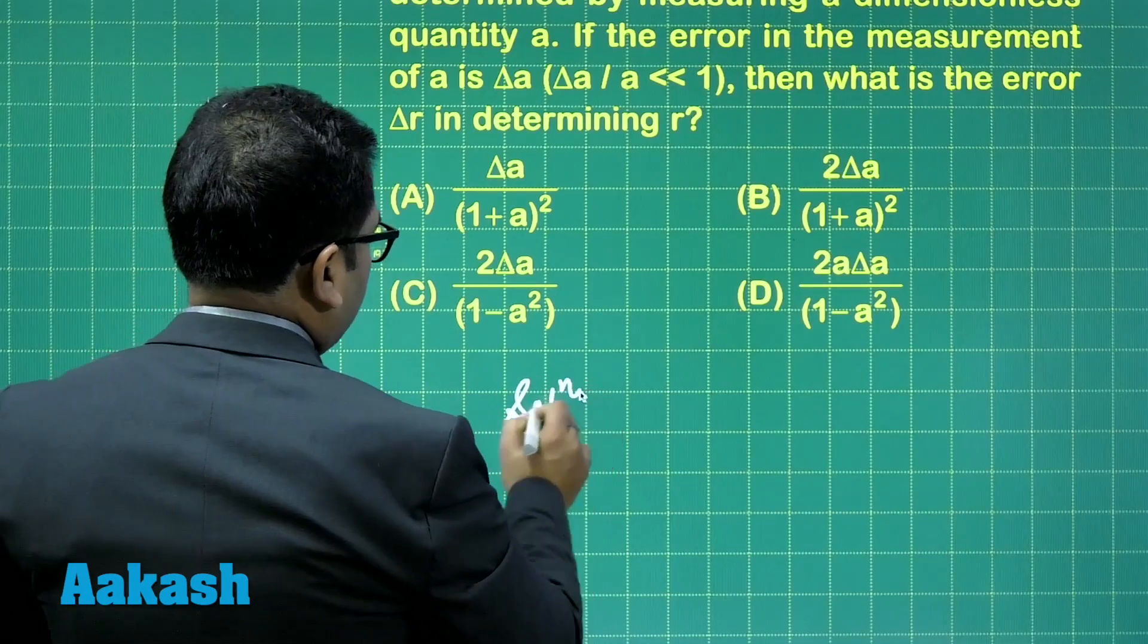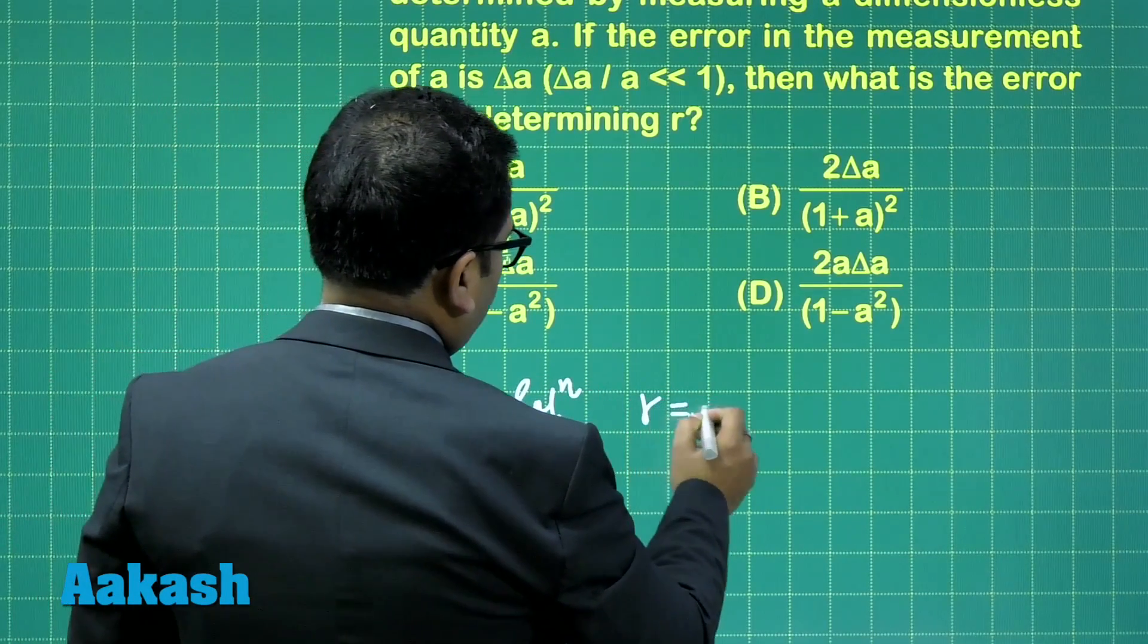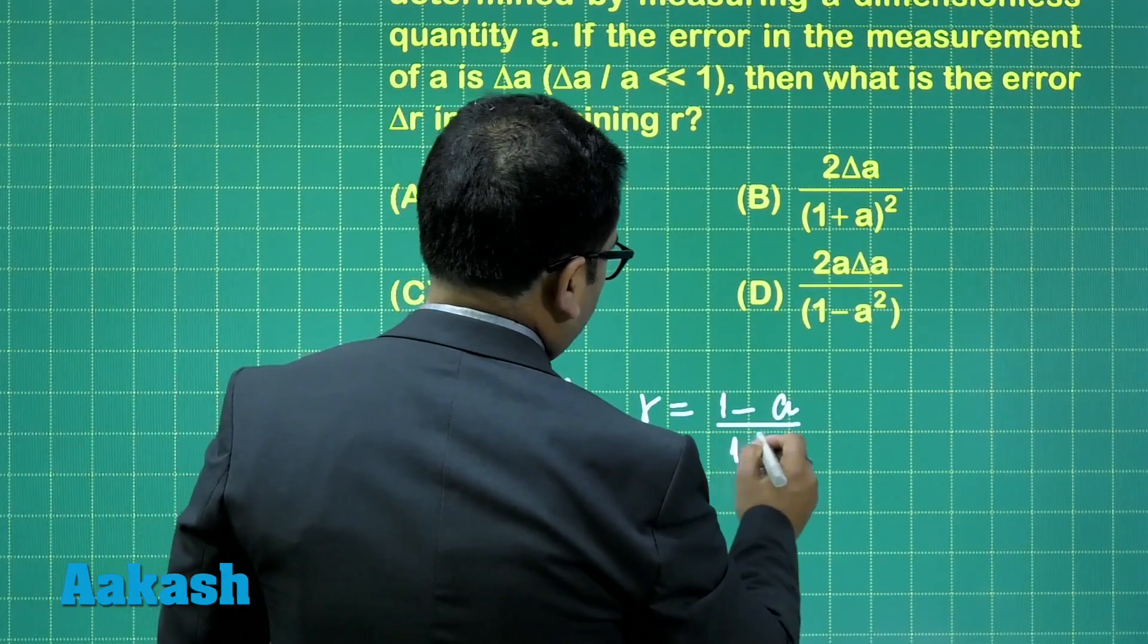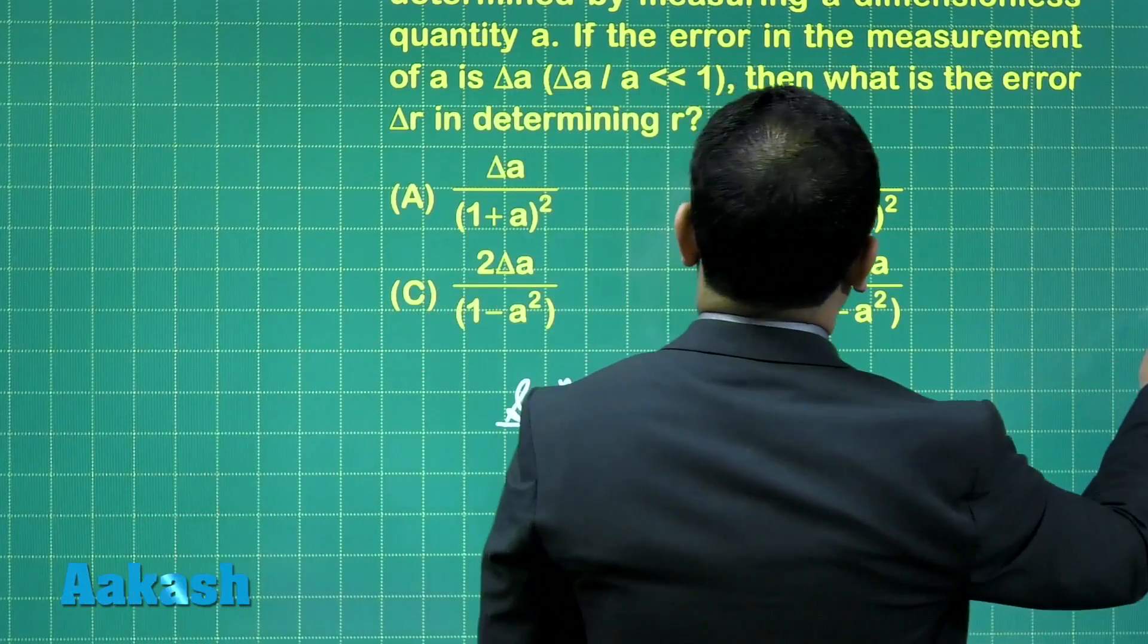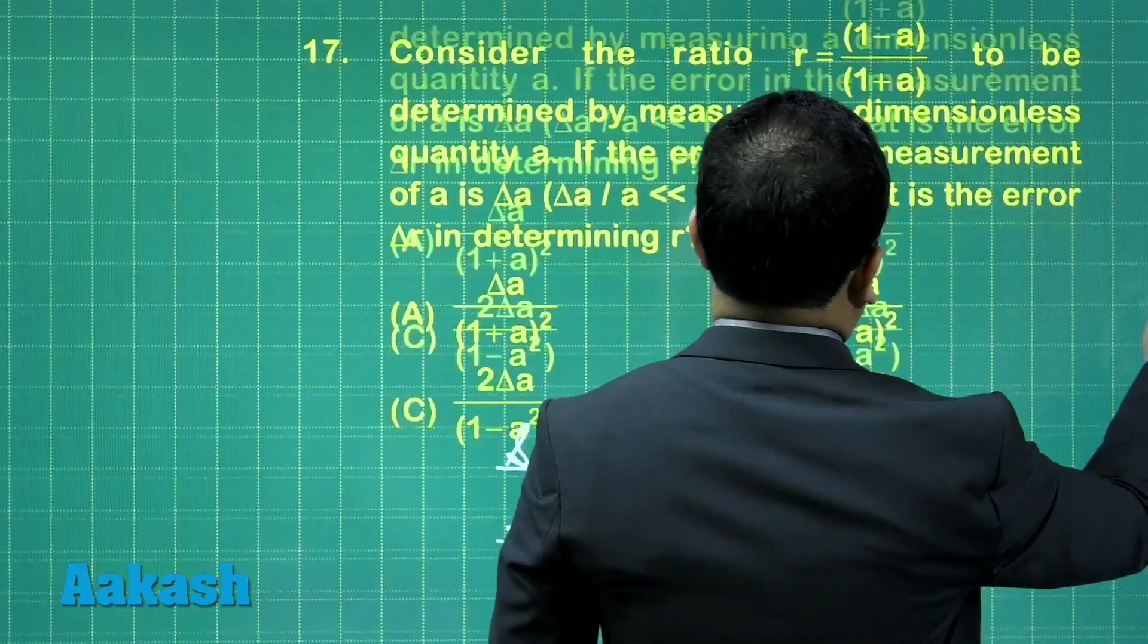The r is (1 minus e) divided by (1 plus e). This is what we have defined r as, let's confirm, yes.